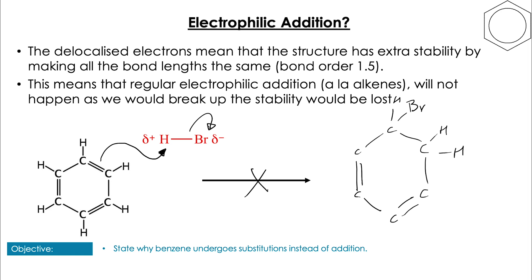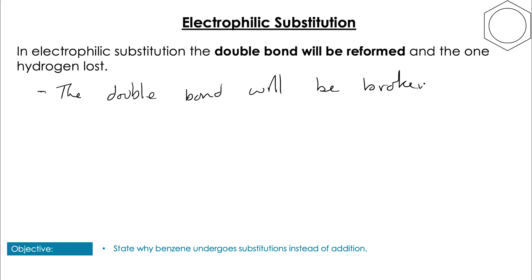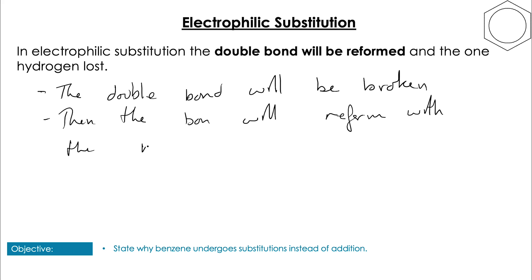Indeed, the double bond is going to be reactive, but it's going to reform because of the delocalization energy and the stability of benzene. What we end up with instead is the double bond will be reformed and one hydrogen will be lost and the electrophile will substitute in where that lost hydrogen once was. So the double bond will be broken initially, we'll have a reactive intermediate, and then the double bond will be reformed and the electrons from the bond with hydrogen will be used to restore the delocalized system to the benzene ring with the new group attached.